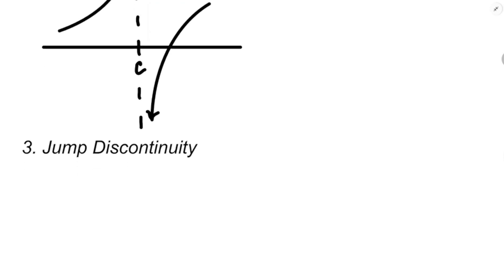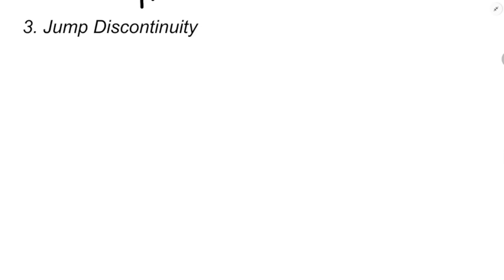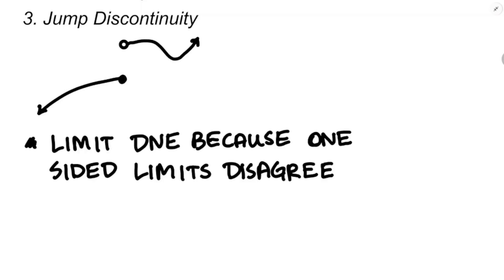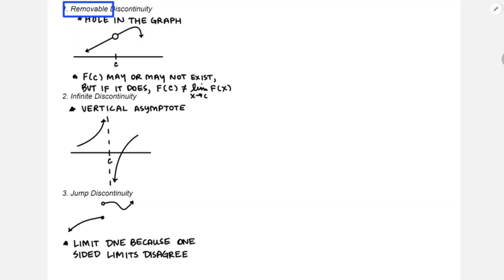The last type is a jump discontinuity, which we've seen caused by taking the absolute value of an object divided by itself, or by piecewise defined functions. It looks like the graph is going one way and then suddenly jumps to something else. This is the type where if asked for the limit, you'd say the limit doesn't exist — because the one-sided limits disagree. That's the hallmark of a jump discontinuity. In conclusion: the hole in the graph is a removable discontinuity, and the infinite and jump discontinuities are both non-removable.